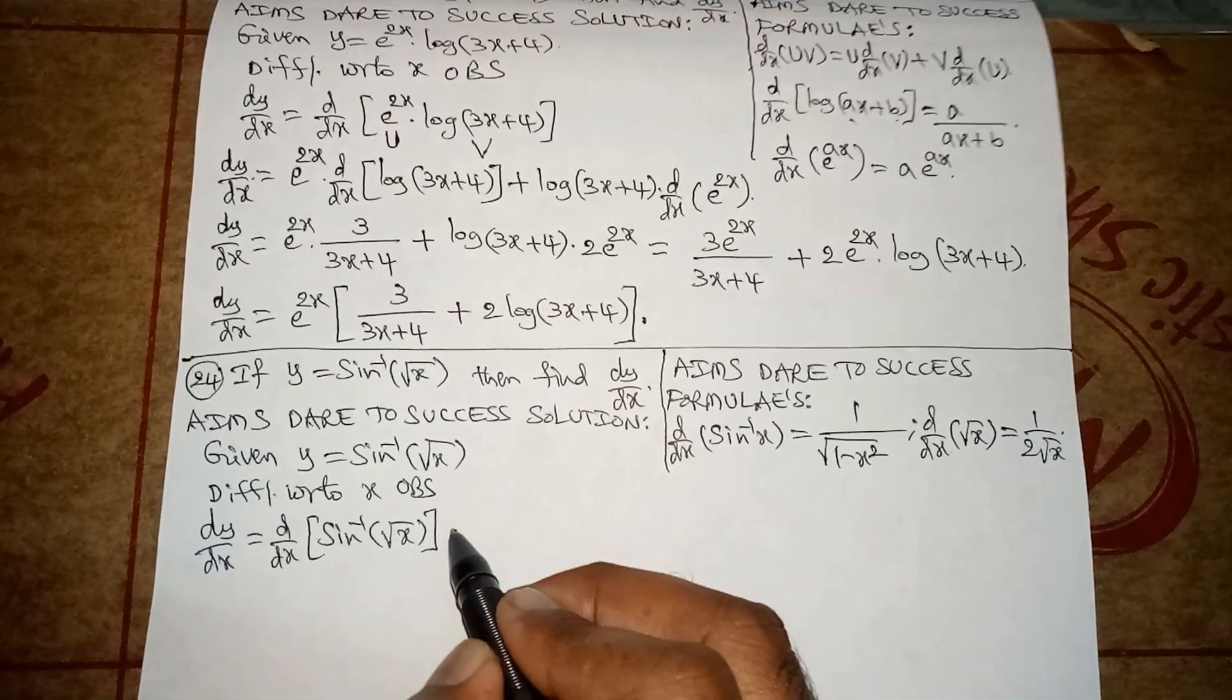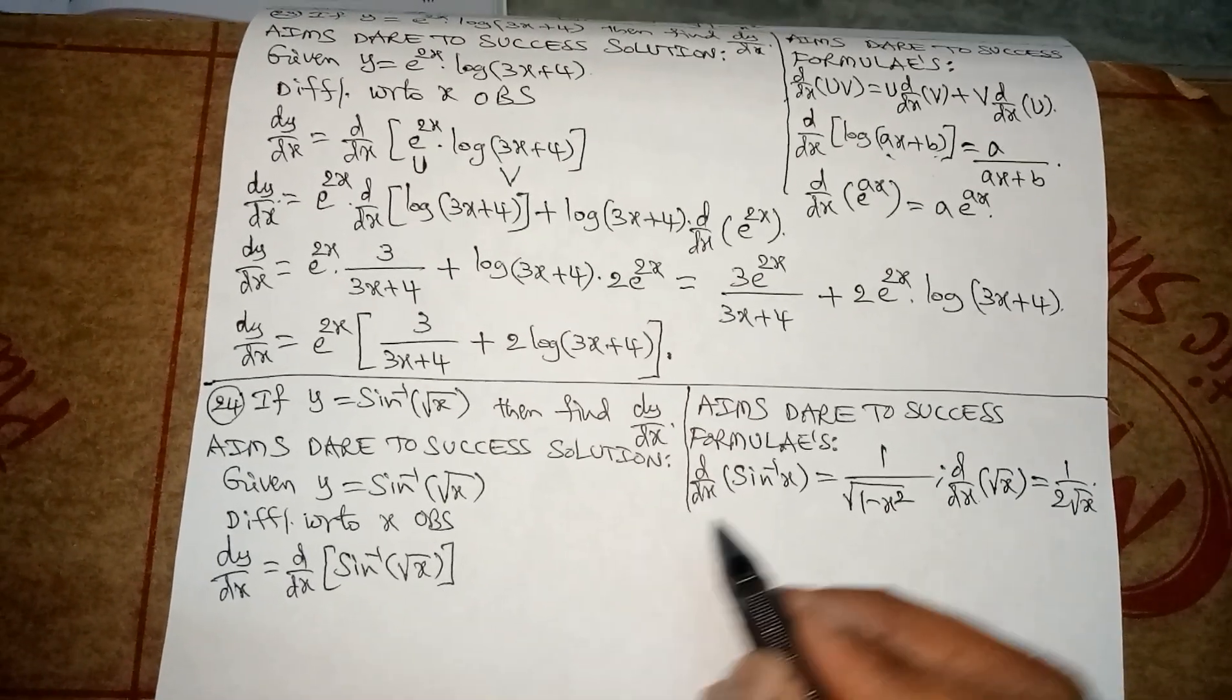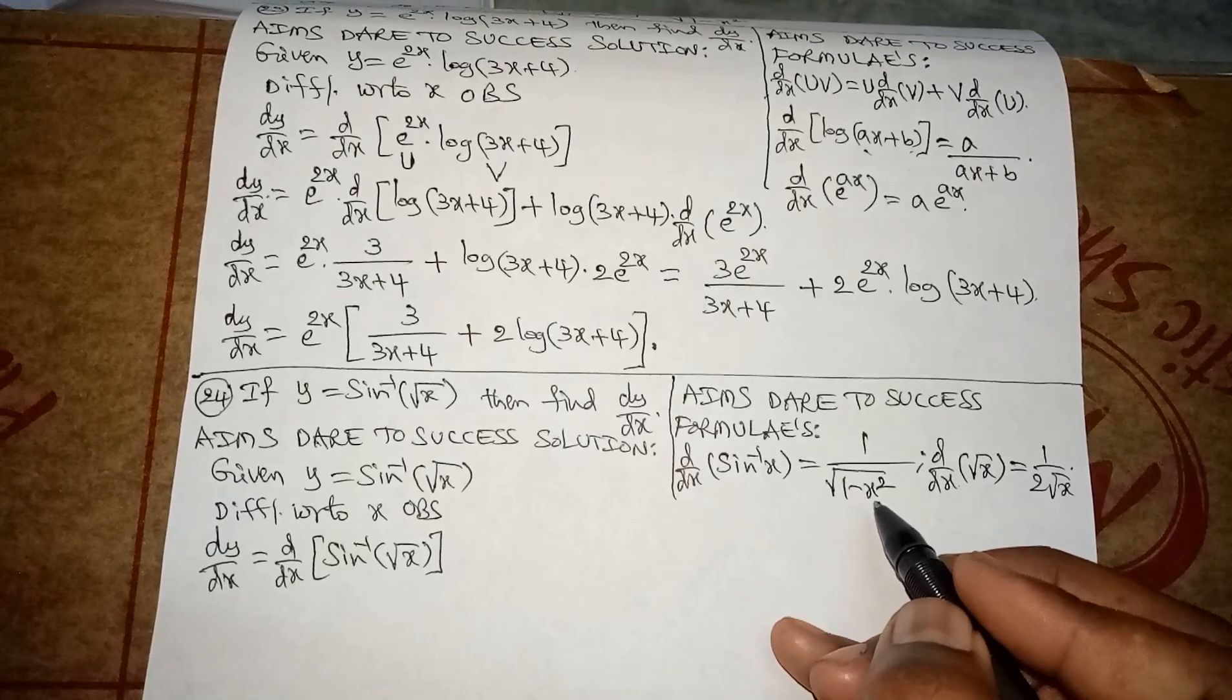Continue the answer. d by dx of sine inverse x is 1 by root 1 minus x square.